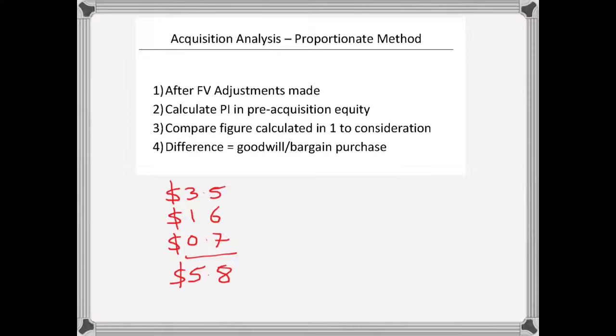When normally we would just compare that to the $5 million that we spent, in the proportionate method, what we need to do is times all of these by 75%, which in this case is the parent's interest. And what we end up with is $2.625 million, $1.2 million for the retained earnings, and $525,000 for the fair value adjustment.